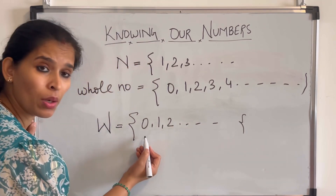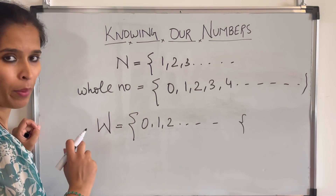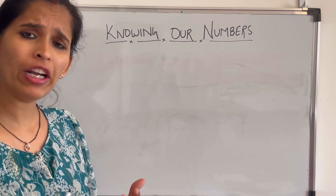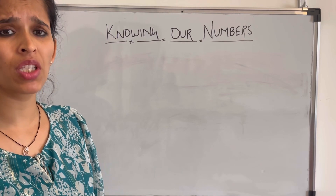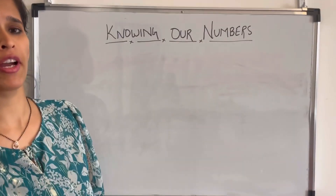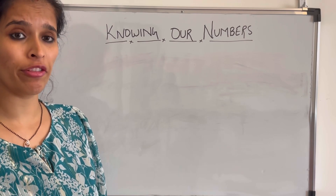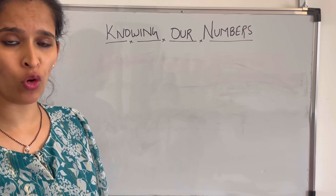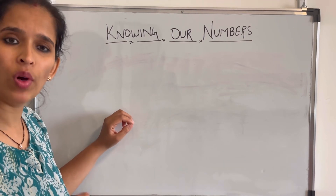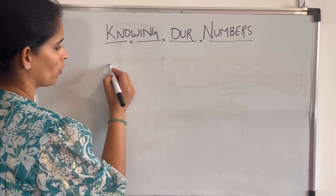The smallest whole number is zero, but again there is no largest whole number. Now let's learn about positive and negative numbers. When we talk about positive and negative numbers, we consider whole numbers like 1, 2, 3, 4, 5 — not decimals like 1.5, which is a decimal number, not a whole number.